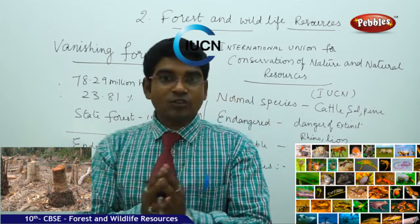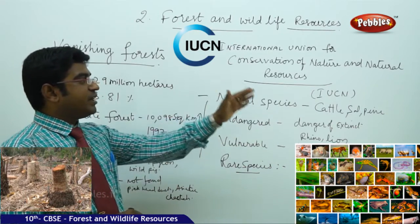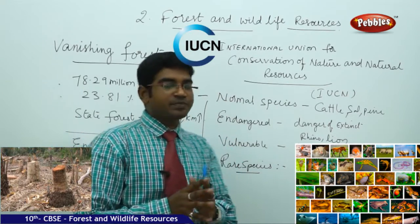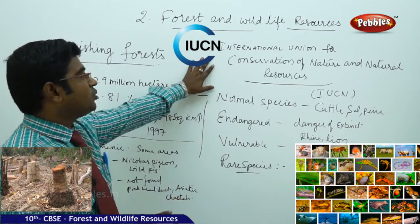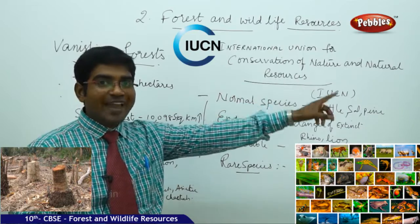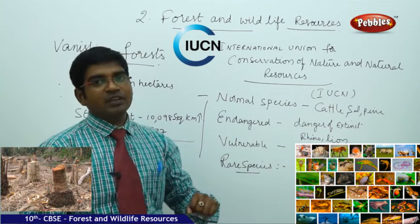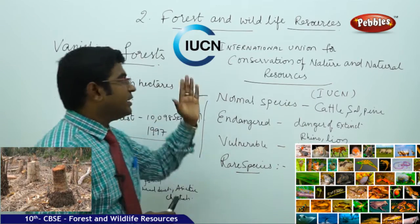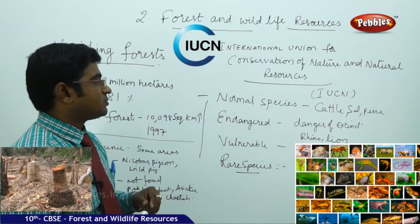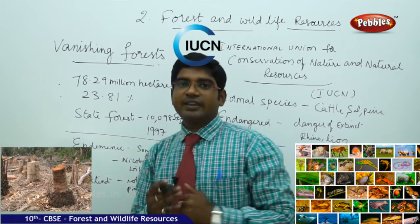Based on the calculations and statistics of the International Union for Conservation of Nature and Natural Resources — known in short as IUCN — we have an international body to look after all these things. The IUCN has categorized the entire flora and fauna into different categories, broadly into six different types.